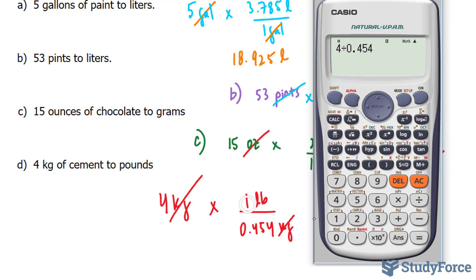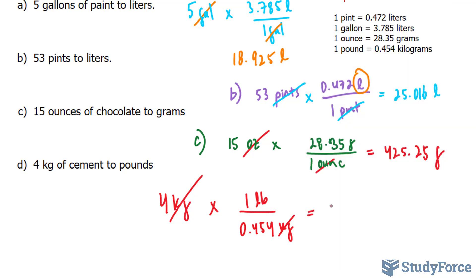So this multiplied to this, divided by that gives us 8.81, 8.81 pounds.